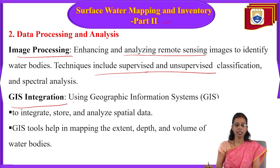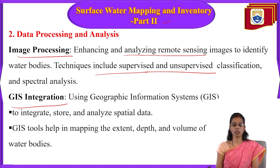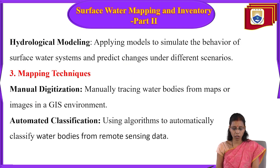Next is GIS integration. GIS — Geographical Information System — helps us store, analyze, and integrate spatial and non-spatial data. We input spatial and non-spatial data into the GIS tool, which helps in mapping the extent, depth, and volume of water. GIS integrates the data together. Under data processing and analysis, we also have hydrological modeling — applying models to simulate the behavior of surface water systems and predict changes under different scenarios.